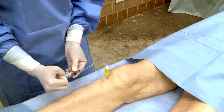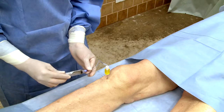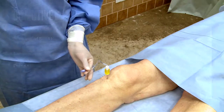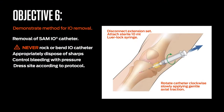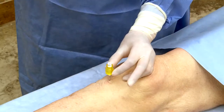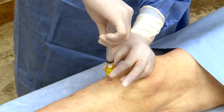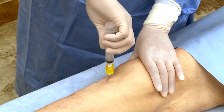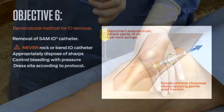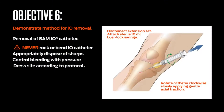Caution: Monitor the insertion site frequently for extravasation. Do not leave the catheter inserted for more than 24 hours. To remove the SAM.IO catheter, disconnect the extension set. Attach a sterile 10-milliliter lure-lock syringe to the hub of the catheter while continuously rotating the catheter clockwise to the right. Slowly apply gentle traction and maintain axial alignment during withdrawal. Do not rock or bend the catheter during removal. Once removed, immediately place the syringe and catheter in an appropriate sharps container and dress the site according to protocol or standard.